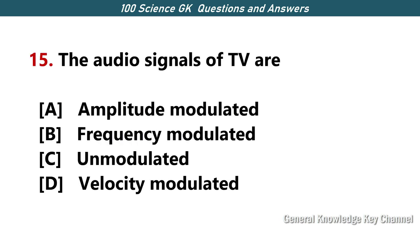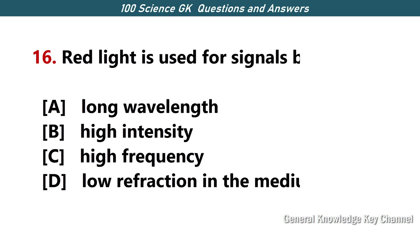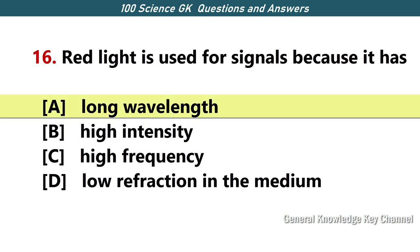The audio signals of TV are — Answer B — frequency modulated. Red light is used for signals because it has — Answer A — long wavelength.